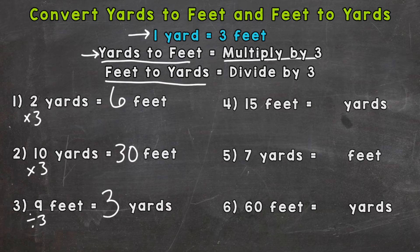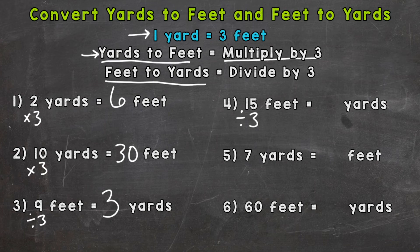Number four: fifteen feet equals how many yards? Going feet to yards, we're splitting that fifteen feet into groups of three, or yards. So we do fifteen divided into groups of three — each group of three feet is one yard. Fifteen divided by three gives us five yards.